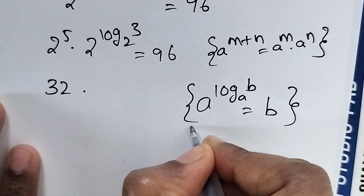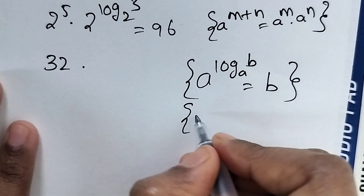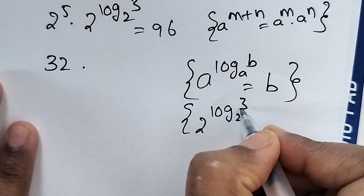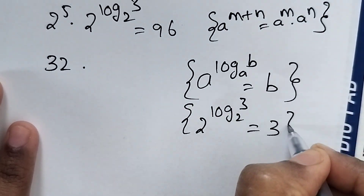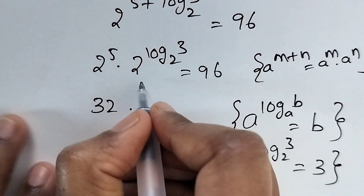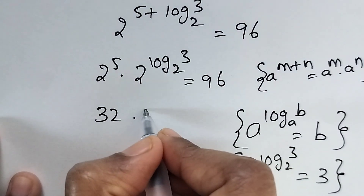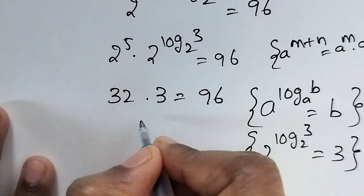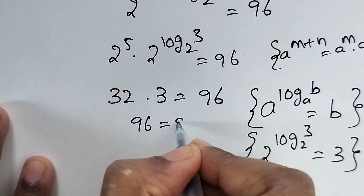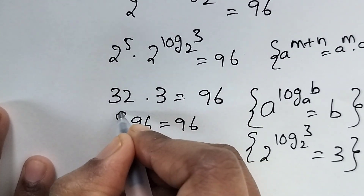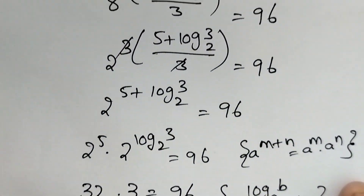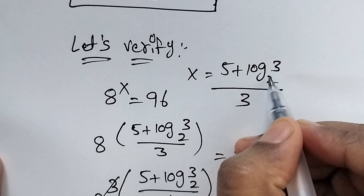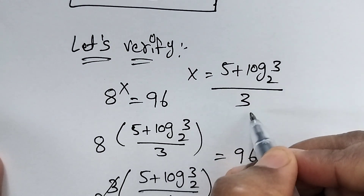Using the formula b^(log_b a) = a, we can write 2^(log₂3) equals 3. So this term's value is 3, giving 32 times 3, which is equal to 96, equals 96. This is true. So the value of x is equal to (5 + log of 3 to the base 2) divided by 3.